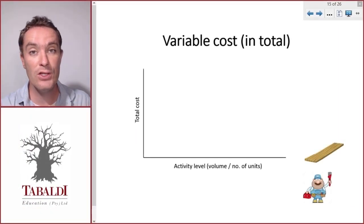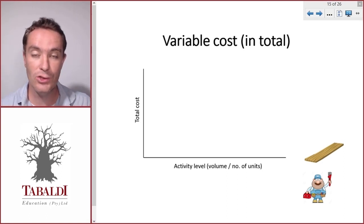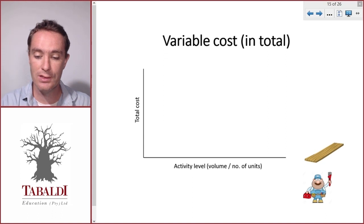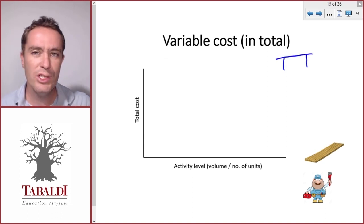Now let's have a look at the first way in which costs can behave or change in relation to the activity level or number of units. So our example of making tables, which of the costs will increase every time we make an additional table?